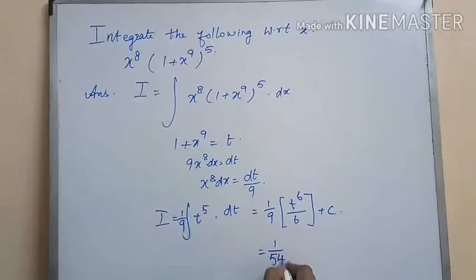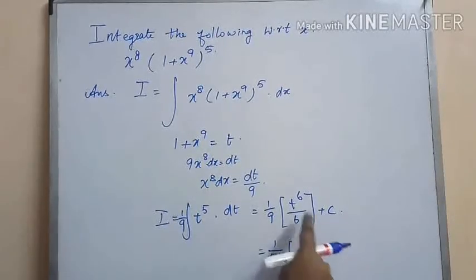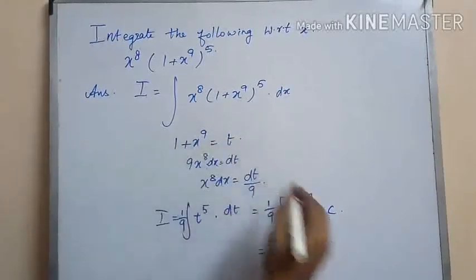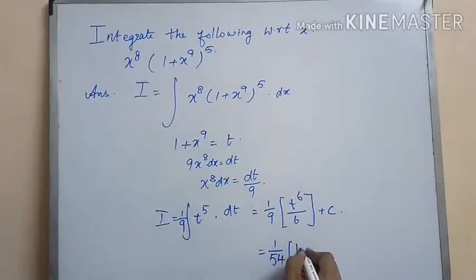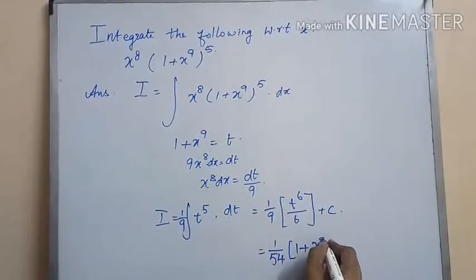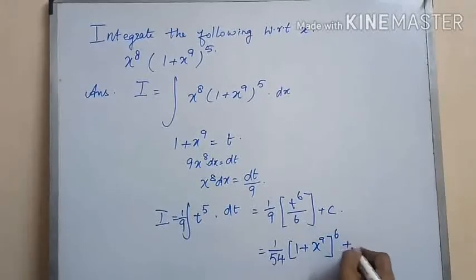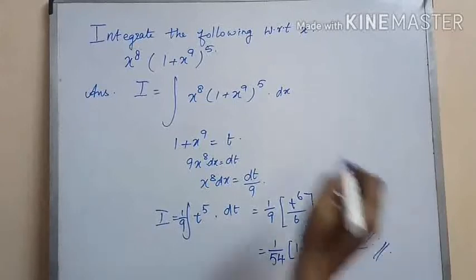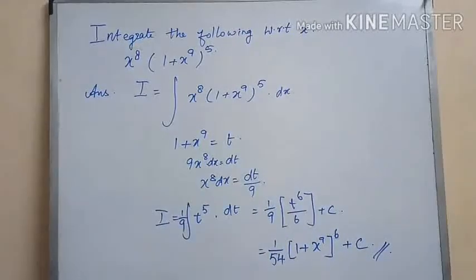This gives us 1 by 54 into 1 plus x to the power of 9, whole to the power of 6, plus c. This is the answer for this integration problem.